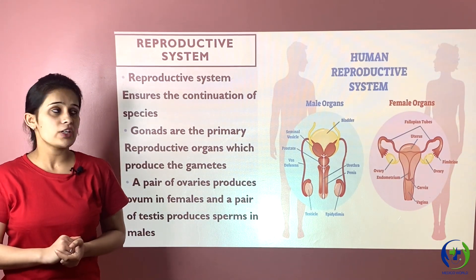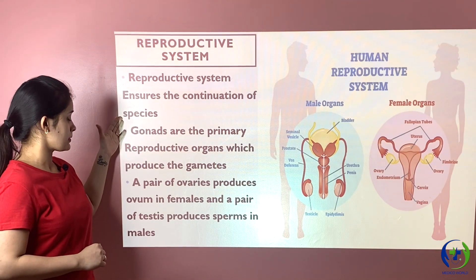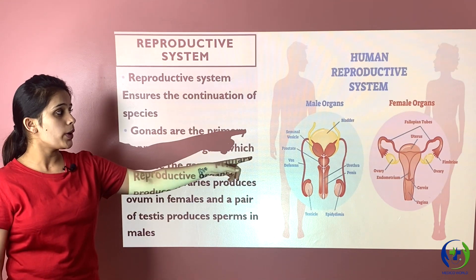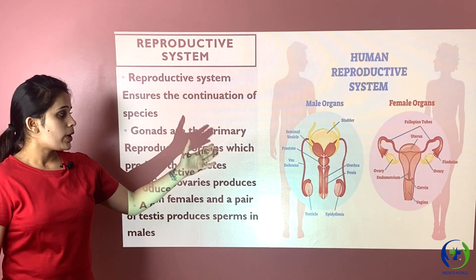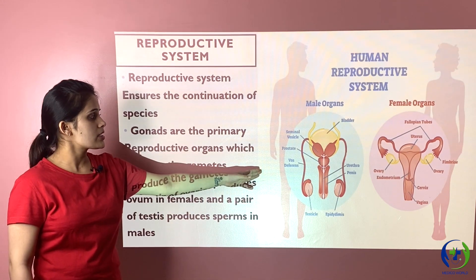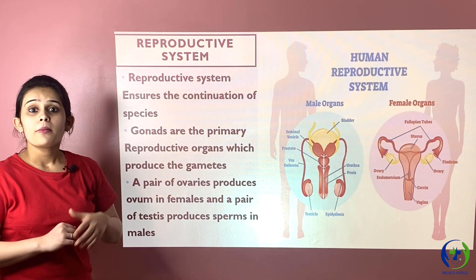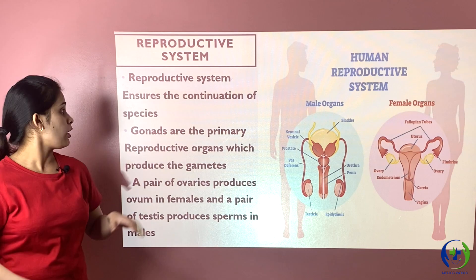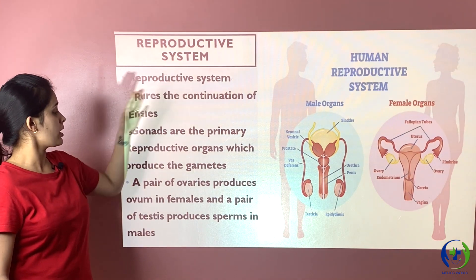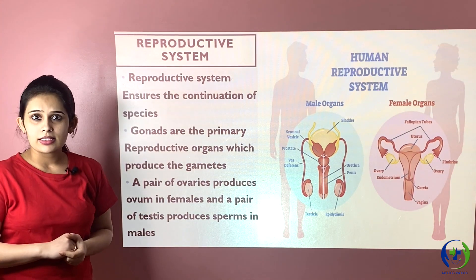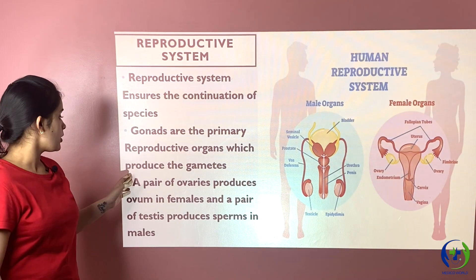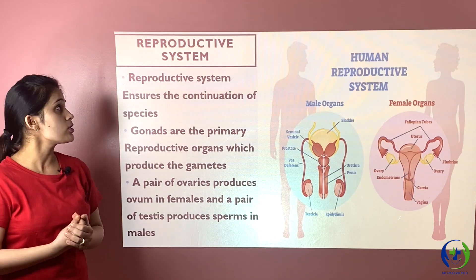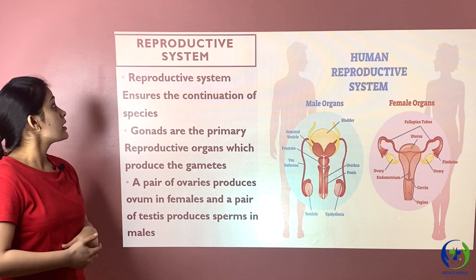The next system is the reproductive system, responsible for the continuation of future generations and the continuation of the species. The female reproductive system includes the fallopian tubes, ovary, uterus, vagina, and cervix, while the male reproductive system includes the testes, vas deferens, prostate, seminal vesicle, penis, and urethra. The gonads of the male reproductive system are the testes, which produce sperm, while the gonads of the female reproductive system are the ovaries, which produce ova.